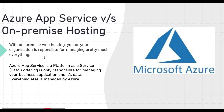Whereas with Azure App Service, all those things are managed by Azure. That means you or your organization is only responsible for managing your business application and its data. Everything else — managing the network, underlying infrastructure, operating systems, updates, critical patches, runtime, and middleware components — is taken care of by Azure. That gives you more time to concentrate on what matters to your business.